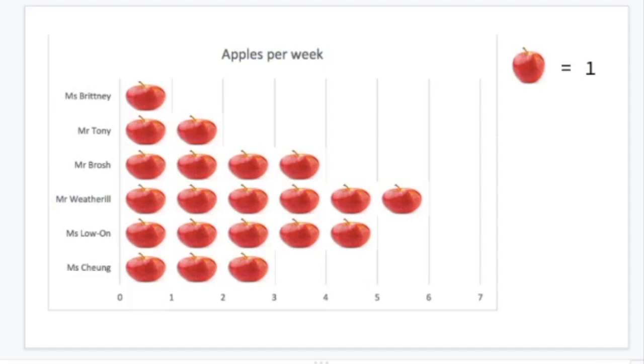Here I've created a pictograph. A pictograph uses pictures rather than graph lines we might see in a bar graph you might be familiar with. This pictograph shows how many apples were eaten in a week by Miss Brittany, Mr Tony, Mr Brosh, Mr Weatherill, Ms Lohan, and Ms Chung.